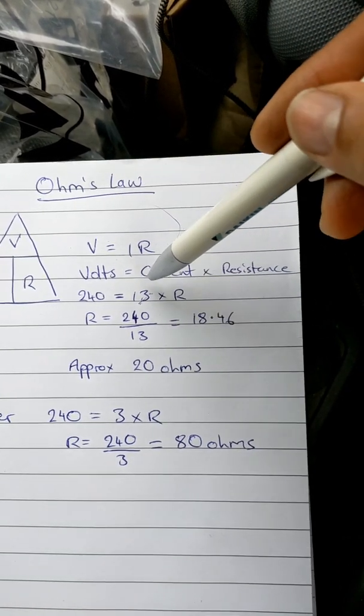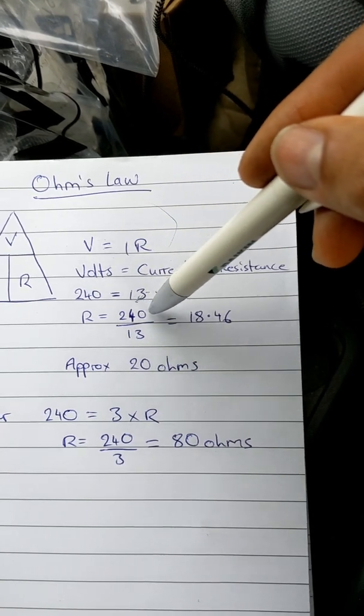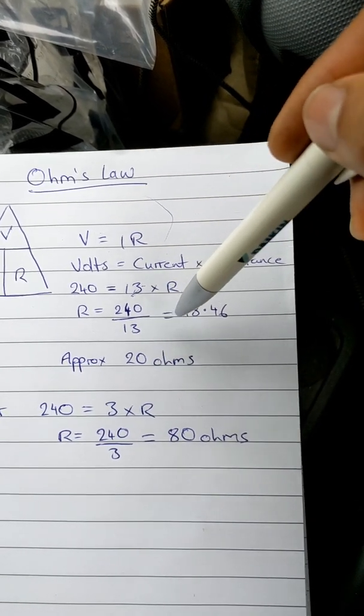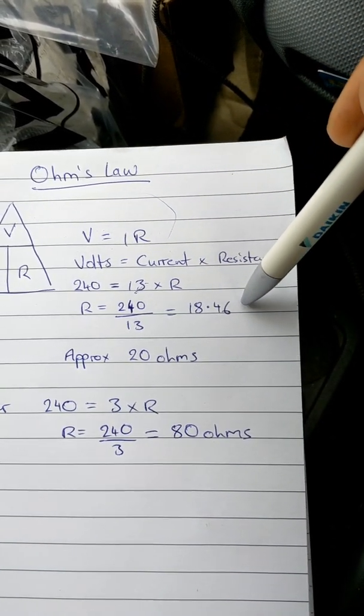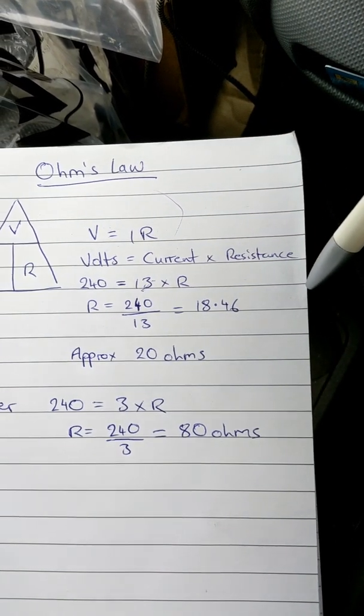To work out R, you just move the 13 over, so you get 240 divided by 13, which is 18.46 ohms, which you can approximately say is 20 ohms.